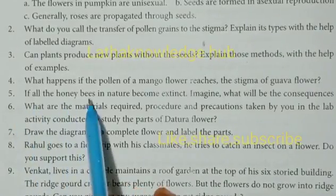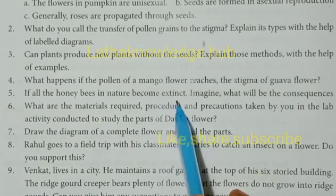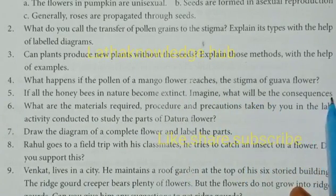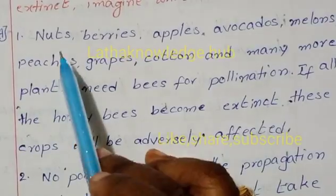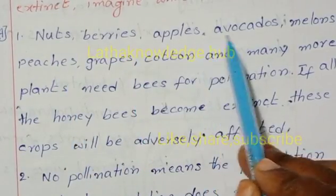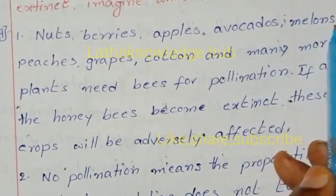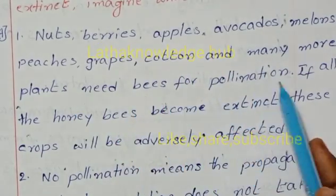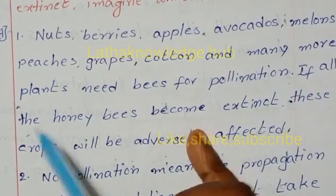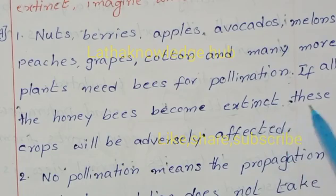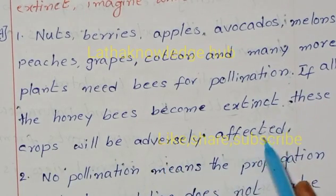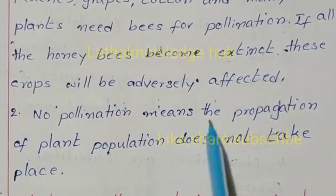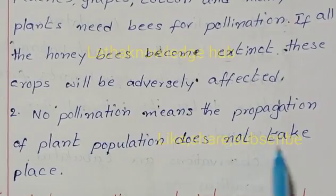If all the honey bees in nature become extinct, imagine the consequences. Nuts, berries, apples, avocados, melons, peaches, grapes, cotton, and many more plants need bees for pollination. If all honey bees become extinct, these crops will be adversely affected. No pollination means the propagation of plant population does not take place.